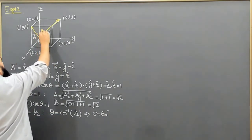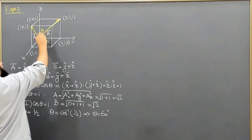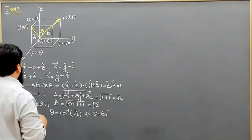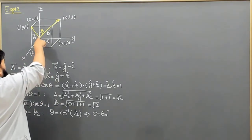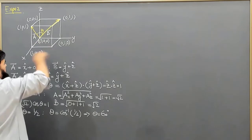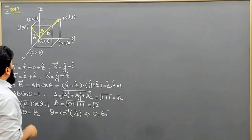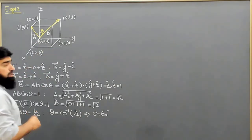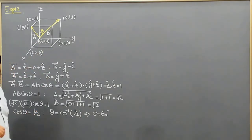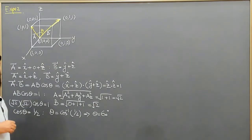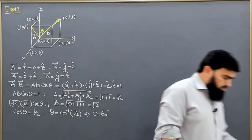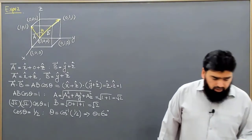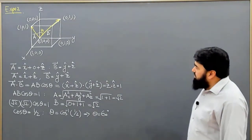If we take another face diagonal, it will also be 60 degrees. All face diagonals of a cube have the same angle between them, and this is how we calculate the face diagonal angle.